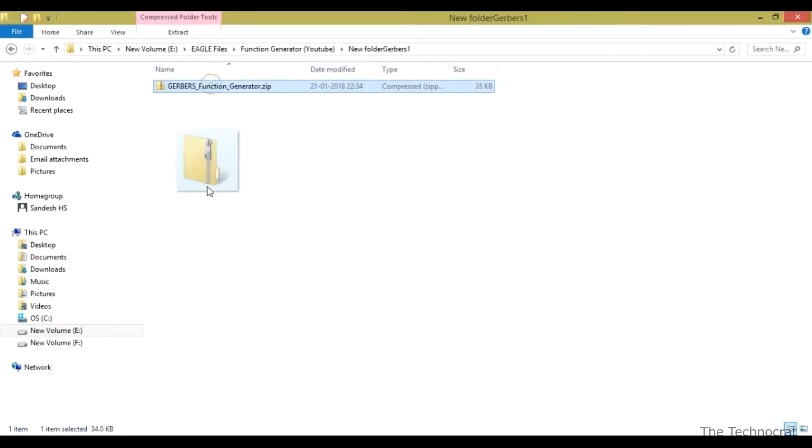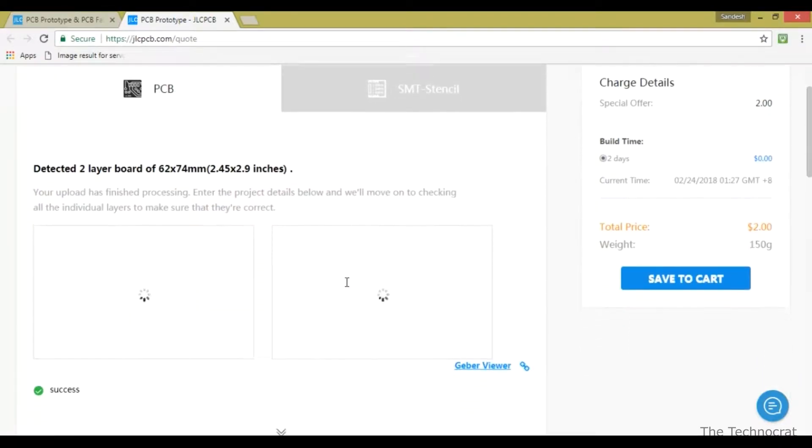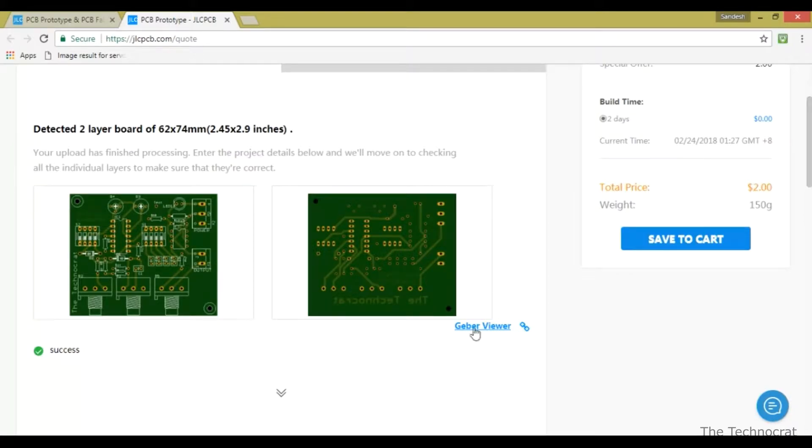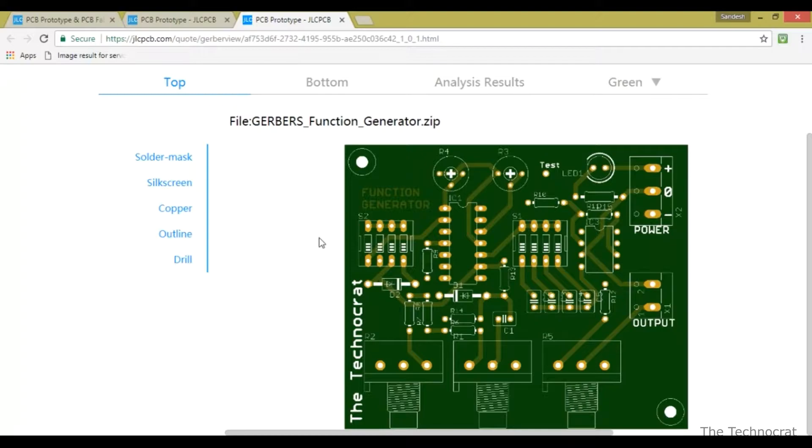Select and drag the zip file containing the PCB design Gerber files into the web page to upload your project Gerber files. You can then use the Gerber viewer in the website to preview your PCB design and confirm that everything is alright.